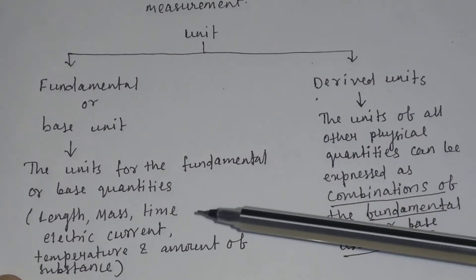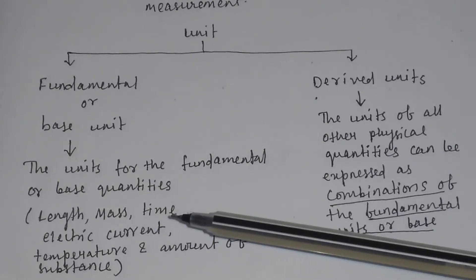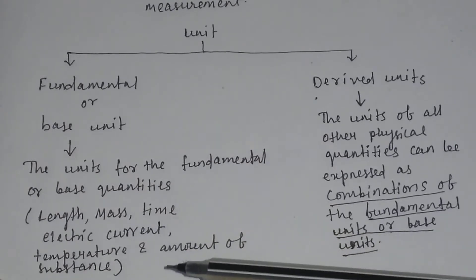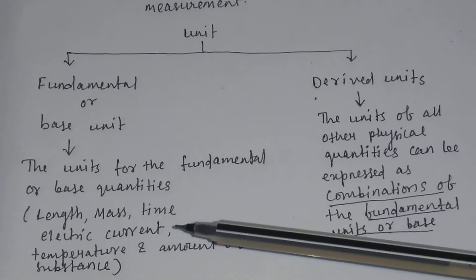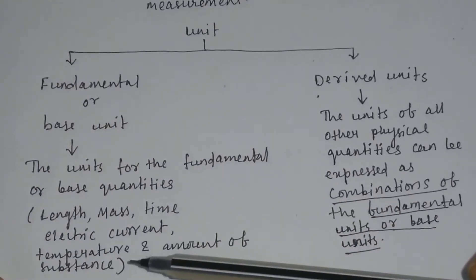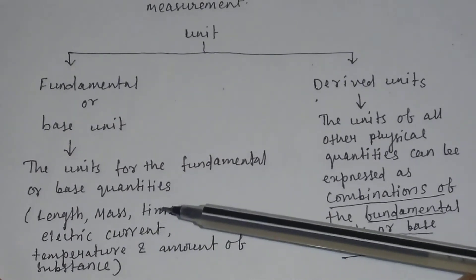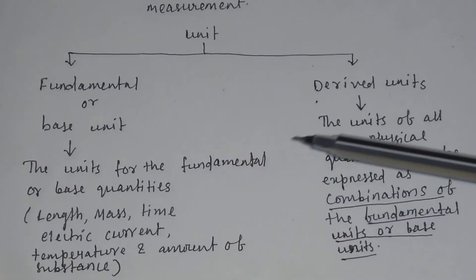We know there are seven fundamental physical quantities: length, mass, time, electric current, temperature, and amount of substance. So, the units of the fundamental or base quantities, these seven base quantities, are called fundamental units.